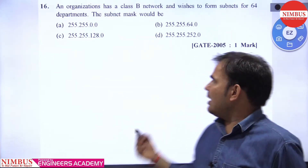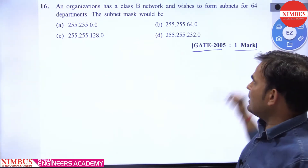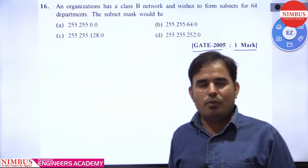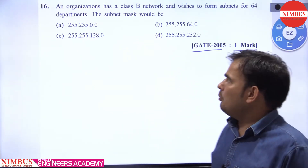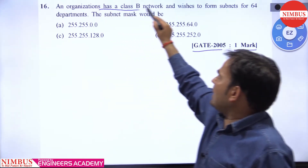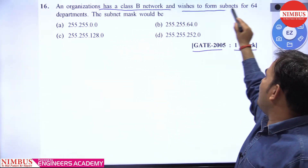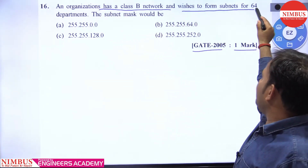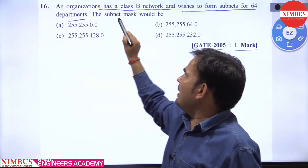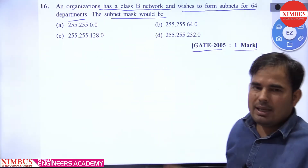Hello friends. This question was asked in GATE 2005. Let's see what it is saying and what it is asking from you. An organization has a class B network and wishes to form subnets for 64 departments. The subnet mask would be?